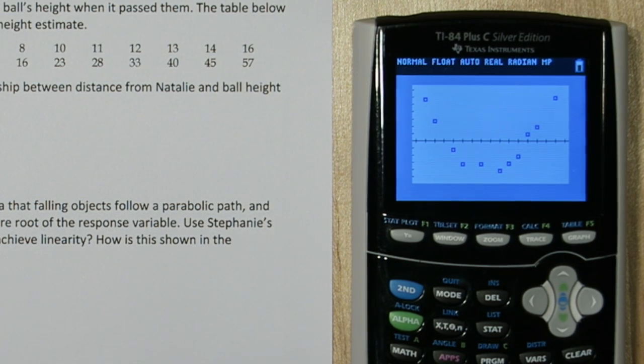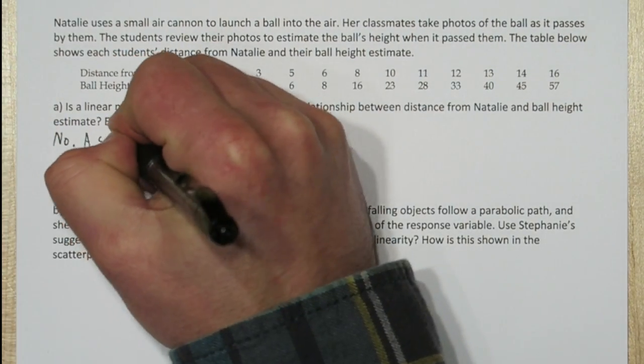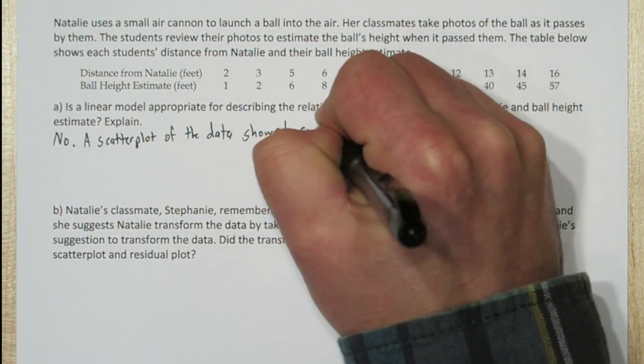Now this one shows clear curvature, not random scatter. So now we know for sure a linear model is not appropriate.